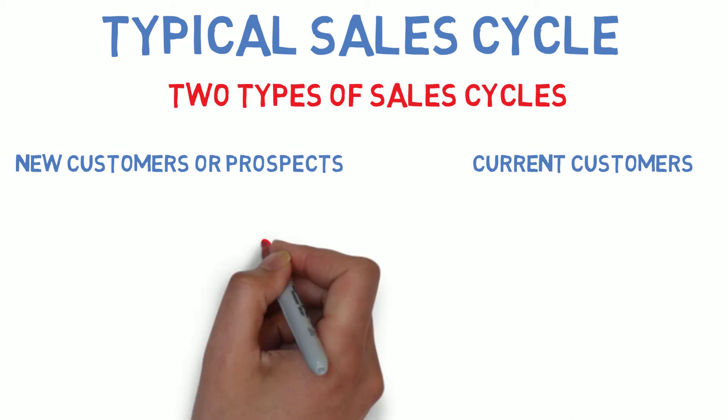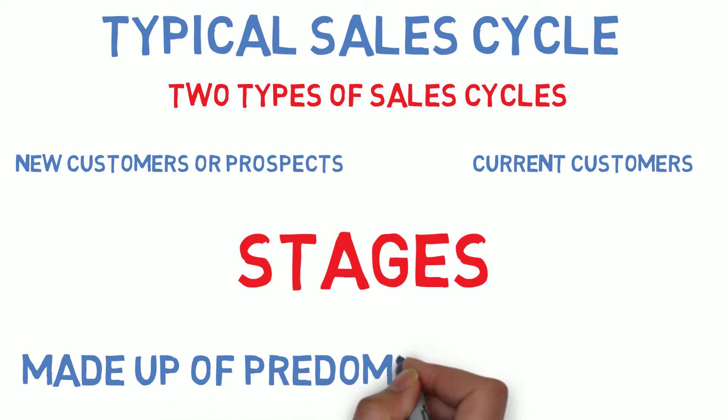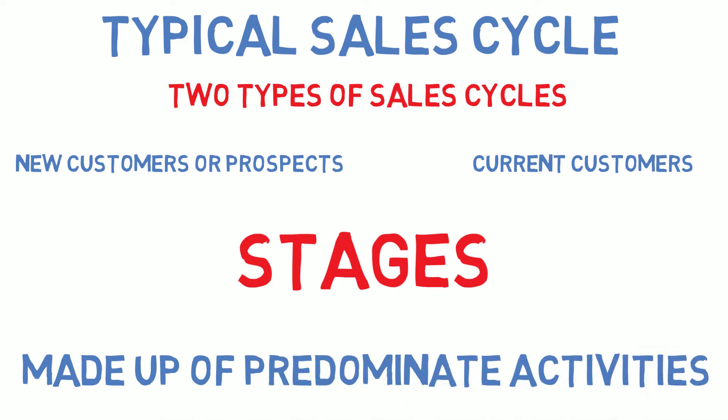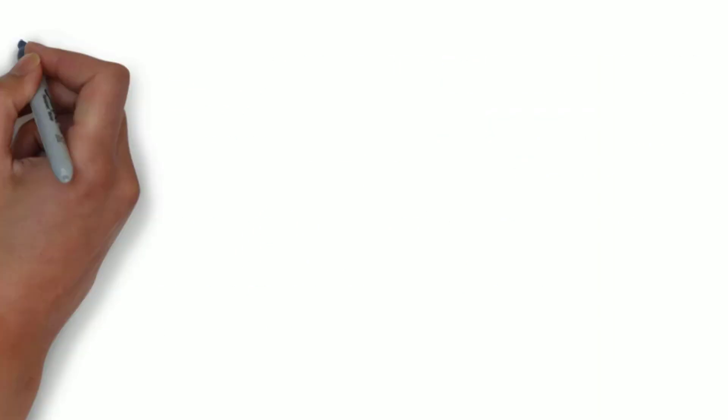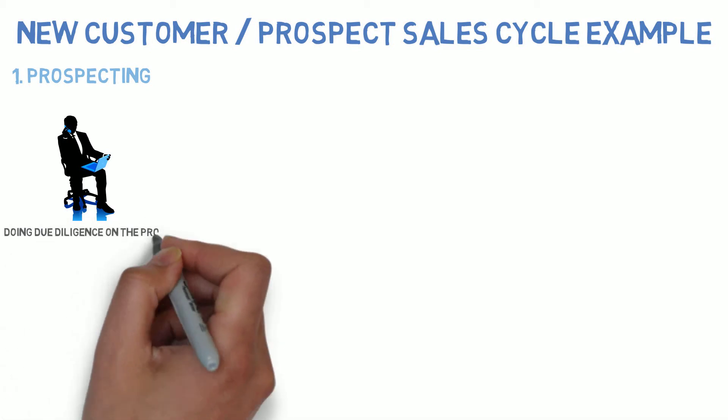What I like to do is break them into stages, and in each stage are what we call predominant activities. To answer your question directly, for a new customer or prospect, obviously the first stage is prospecting. Within prospecting, there are many predominant activities, such as doing your due diligence on the prospect and determining — qualifying — are they really a prospect? And sometimes you can't do it until you get to see them.